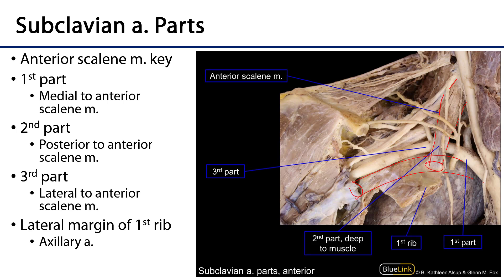Here we can see the subclavian artery. This is a right subclavian artery, so it originates from the brachiocephalic trunk. Everything from this bifurcation up to the medial border of the anterior scalene muscle is the first part. Everything behind the anterior scalene muscle is the second part, and everything lateral to the anterior scalene muscle is the third part.